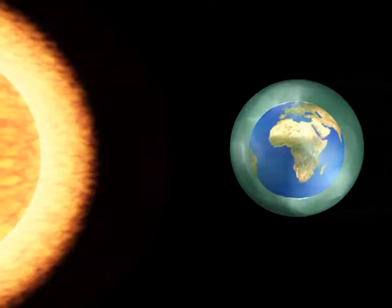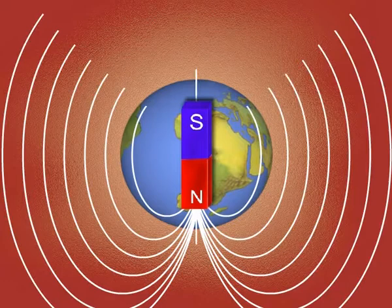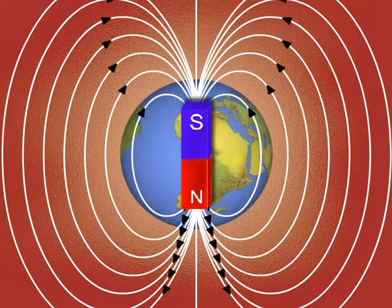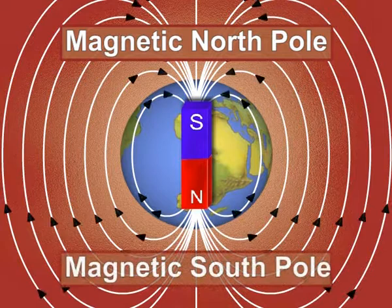The magnetic field is located at the center of Earth, represented as a hypothetical magnetic dipole. Earth's geographic north corresponds to the magnetic north pole, and the geographic south corresponds to the magnetic south pole.